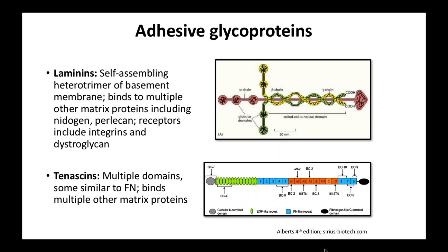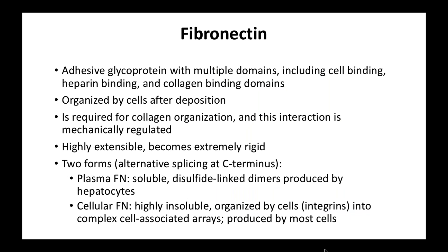The second big component of matrix proteins are the adhesive glycoproteins — proteins important in adhesion that also have sugars attached. The laminins are heterotrimers very important in the basement membrane. Together with collagen IV, they are one of the big components of the basement membrane, binding to other matrix proteins including nidogen and perlecan, as well as tenascins. These adhesive glycoproteins bind to and connect many other different matrix proteins, so they're very important in matrix organization.